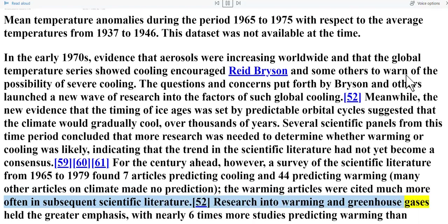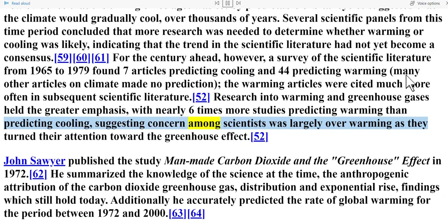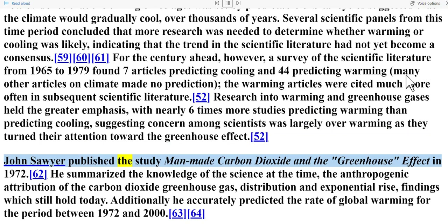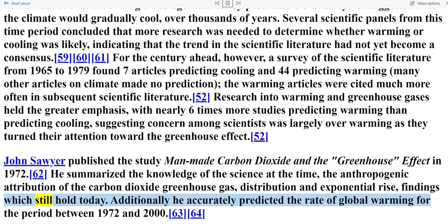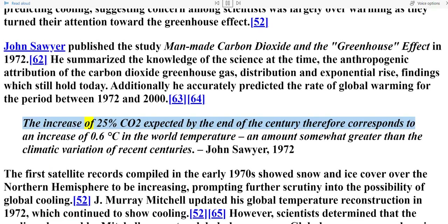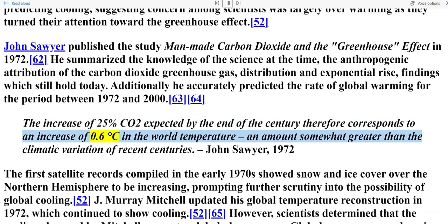Research into warming and greenhouse gases held the greater emphasis, with nearly six times more studies predicting warming than predicting cooling, suggesting concern among scientists was largely over warming as they turned their attention toward the greenhouse effect. John Sawyer published the study 'Man-Made Carbon Dioxide and the Greenhouse Effect' in 1972, summarizing the science at the time. He accurately predicted the rate of global warming for the period between 1972 and 2000, writing: 'The increase of 25 percent CO2 expected by the end of the century therefore corresponds to an increase of 0.6 degrees Celsius in the world temperature — an amount somewhat greater than the climatic variation of recent centuries.'